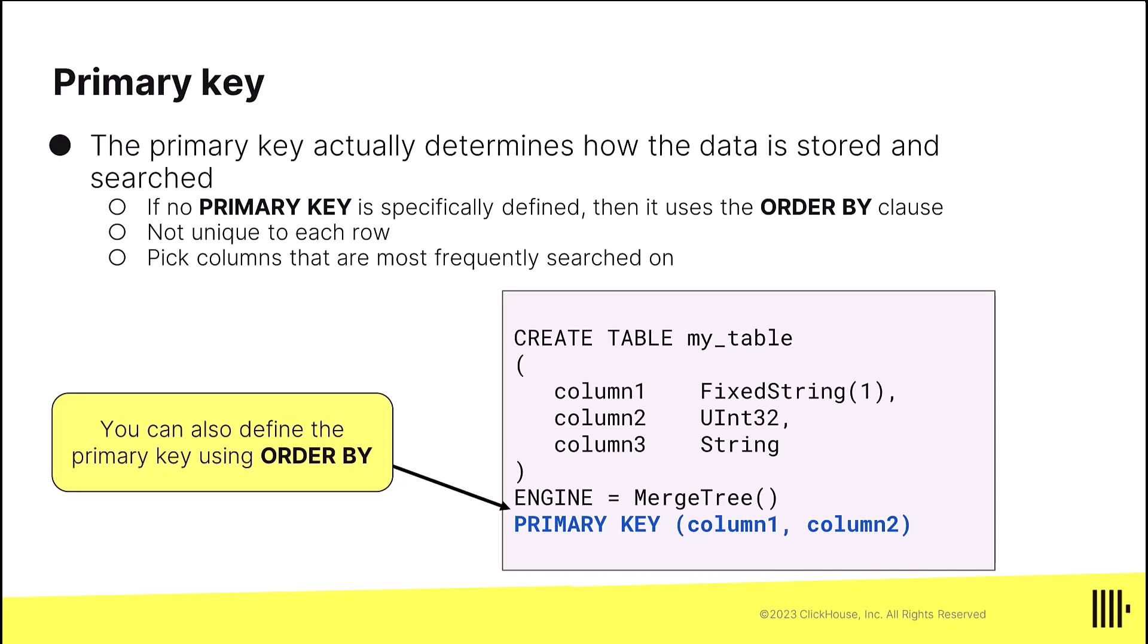In this simple example here, I have three columns: column 1, column 2, and column 3. For whatever reason, I picked column 1 and column 2 to be the primary key. And by the way, I could have replaced primary key with ORDER BY. The ORDER BY clause would have become the primary key.